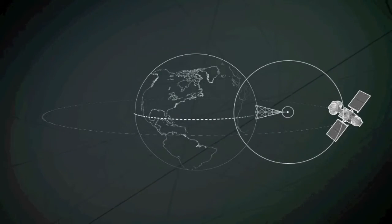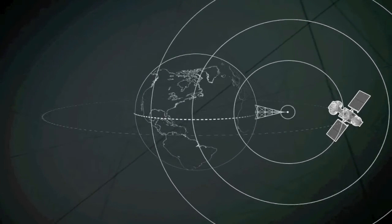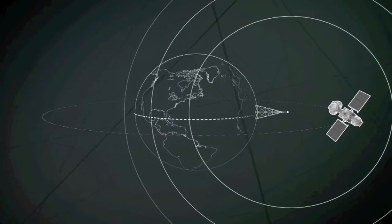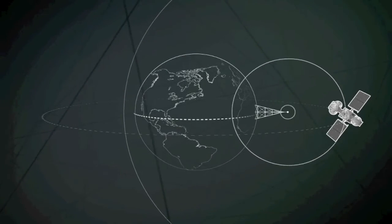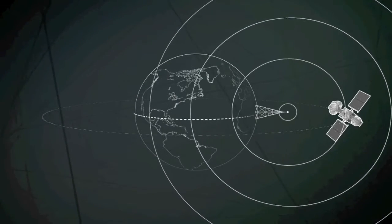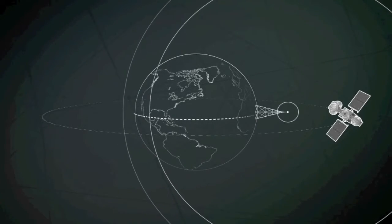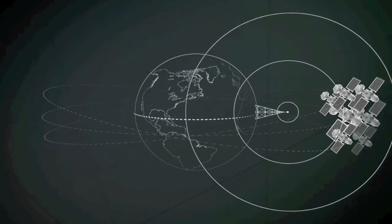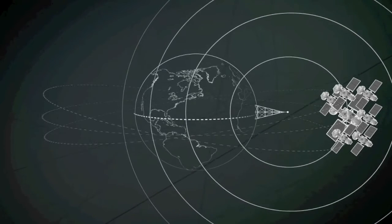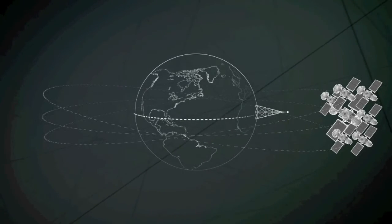The advantage is that antennas on the ground do not have to move to track a satellite, but it also means that this part of space becomes crowded. Because satellites must be kept a certain distance apart to avoid radio interference, only a limited number of orbital slots is available.